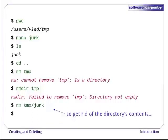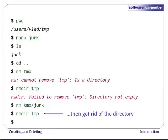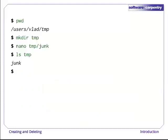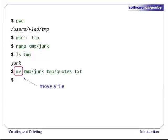If we want to get rid of temp, we must first delete the file junk. The directory is now empty, so rmdir deletes it. Let's create that directory and file one more time. Junk isn't a particularly informative name, so let's change the file's name using mv. mv is short for move. We use it to move a file from one place to another. It also works on directories — there is no separate mvdir command.